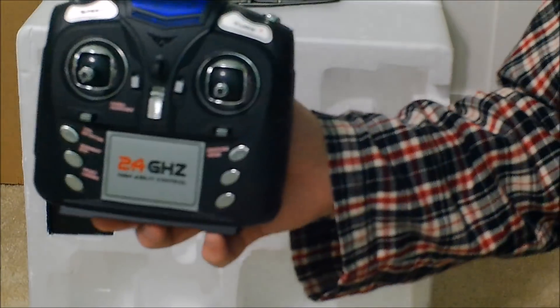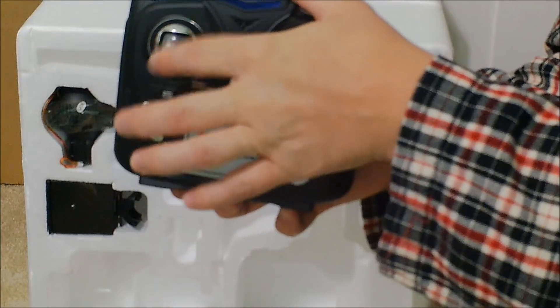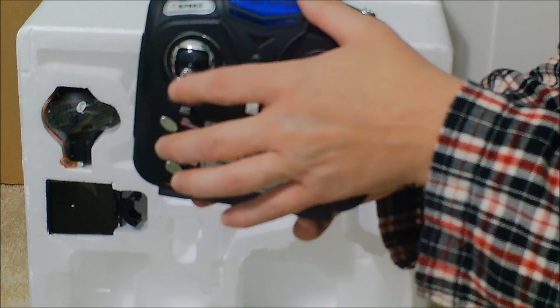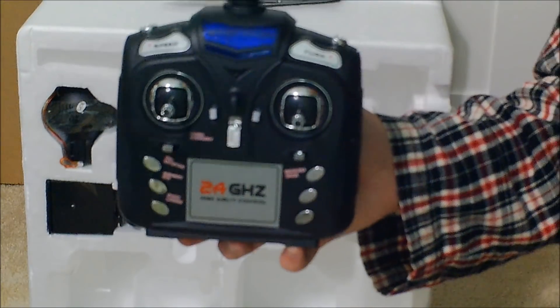Here we have the controller. We can see that the throttle stick does return to the center, which is a good indication that this has altitude hold.